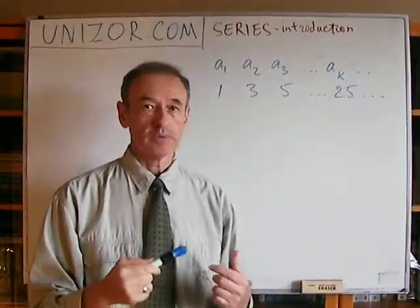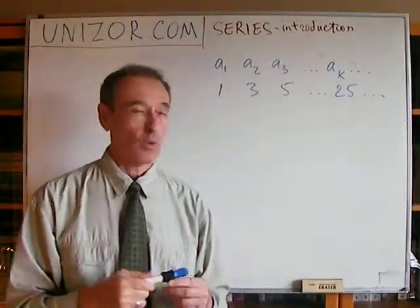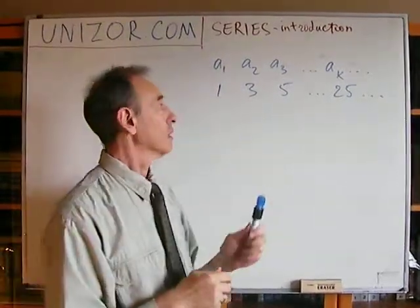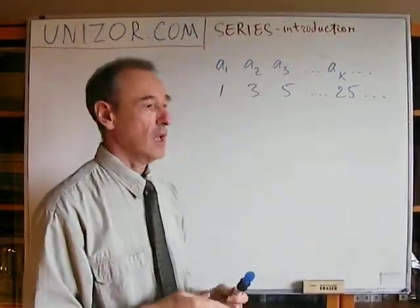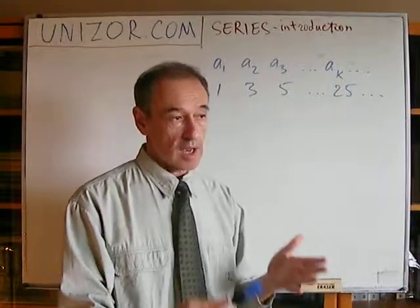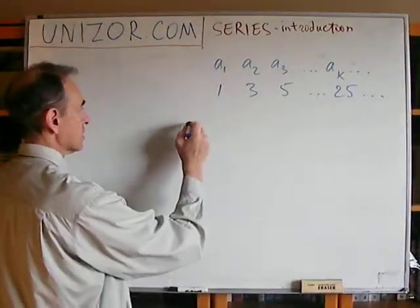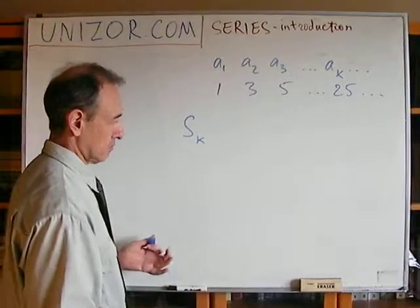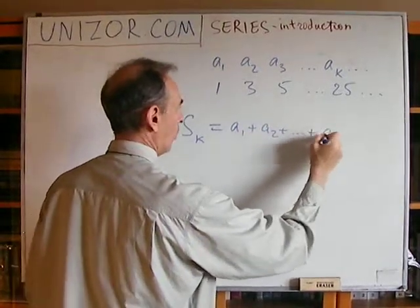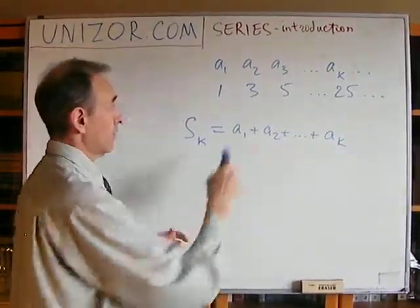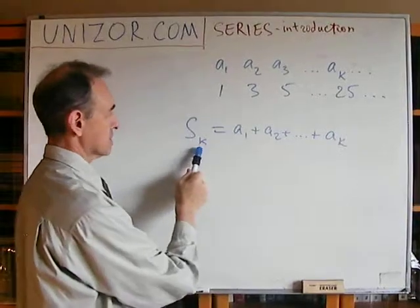Now, series is a sum of a sequence. Usually, we are summing up together all the elements of the sequence beginning from the first one, which is A1, or in our example, that's the first odd number, which is 1, and ending at some maximum number which we are including into summation. For instance, a series which we can call Sk is a sum of all elements of the base sequence with indices from 1 to k, and that's why I use the index k here.